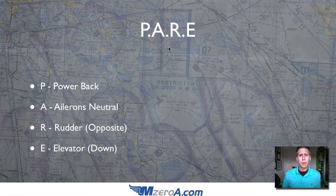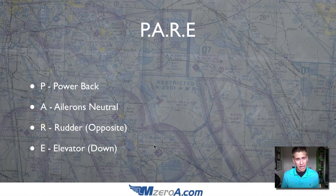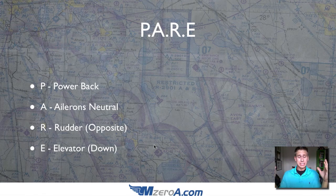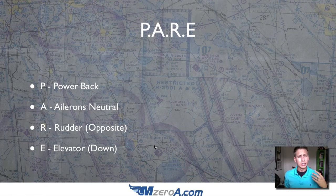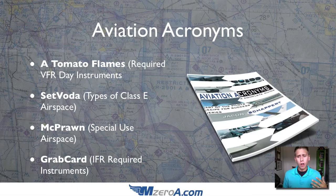So remember PARE: power back, ailerons neutral, rudder opposite, and elevator down. Now if you enjoyed this acronym and that's how you learn — remembering stuff through acronyms — I just released a book a couple of weeks ago called Aviation Acronyms.